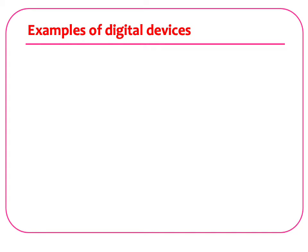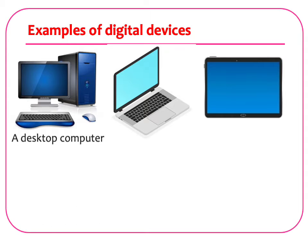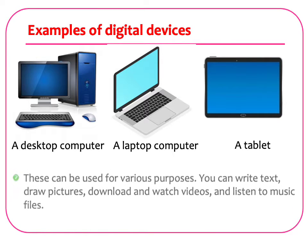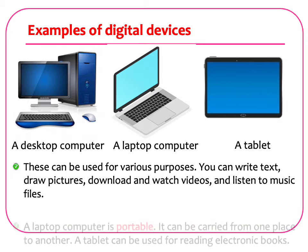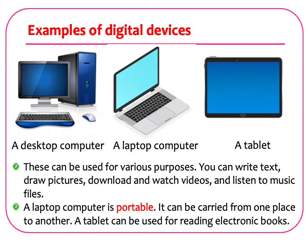Examples of digital devices include a desktop computer, a laptop computer, and a tablet. These can be used for various purposes — you can write text, draw pictures, download and watch videos, and listen to music files. A laptop computer is portable and can be carried from one place to another. A tablet can be used for reading electronic books.